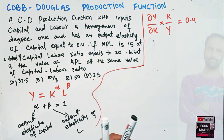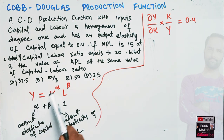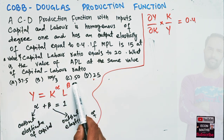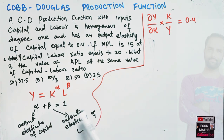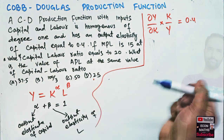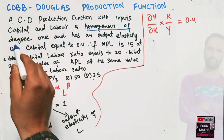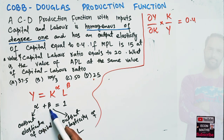The Cobb-Douglas production function with two inputs capital and labor looks like this: Y equals K to the power alpha times L to the power beta. Here alpha denotes the output elasticity of capital and beta denotes the output elasticity of labor. We are told it is homogeneous of degree 1.